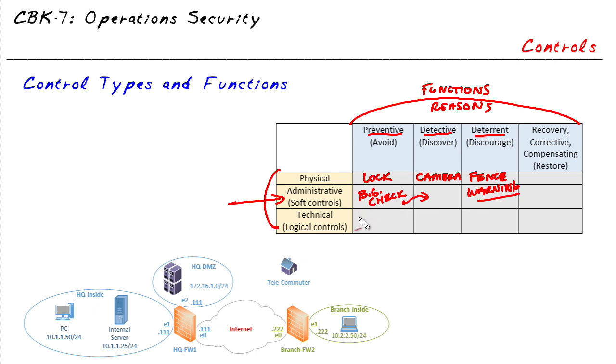For technical controls, we have things like login passwords or multi-factor authentication to control who can get into a system. That would be an example of a technical control. It's preventing unauthorized access into the system. A detective control, from a technical perspective, would be creating log files or audit trails, as it's often called. Another technical control that'd be over in this column would be making backups, so if we have a system failure or loss of data, we could restore from those backups.